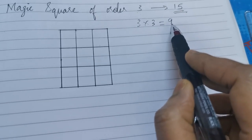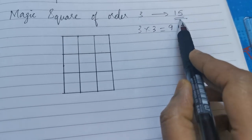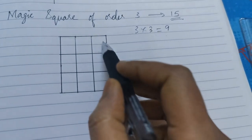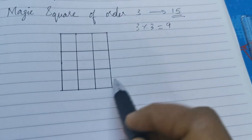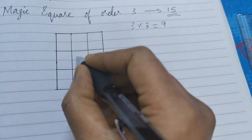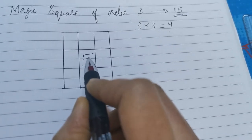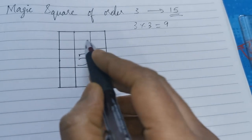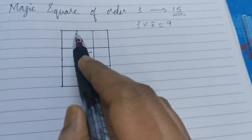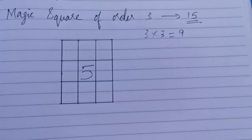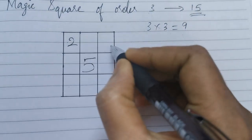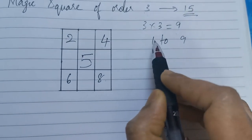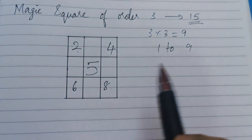We will fill numbers from 1 to 9 such that the sum is 15 horizontally, vertically or diagonally. The first step is to put the number 5 in the middle square. The second step is to fill the corner squares with even numbers: 2, 4, 6 and 8. These are the even numbers from 1 to 9.